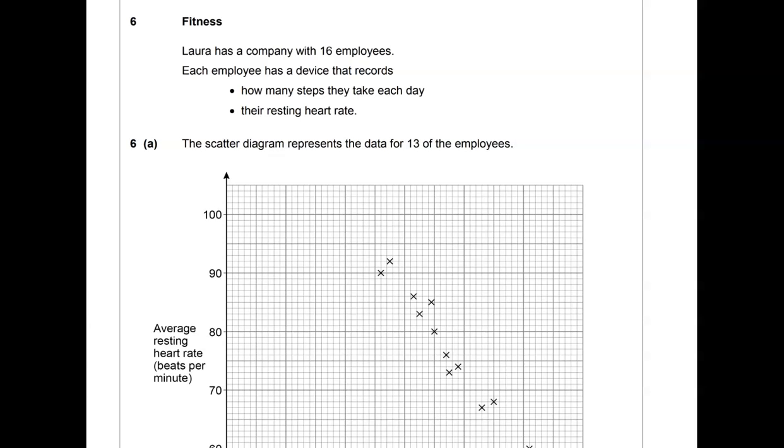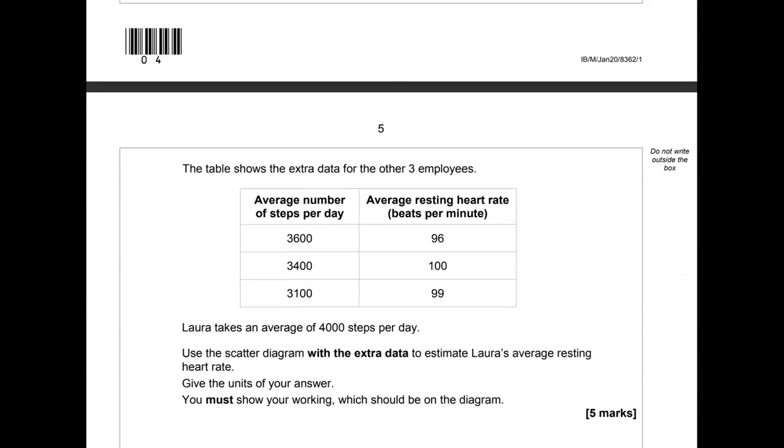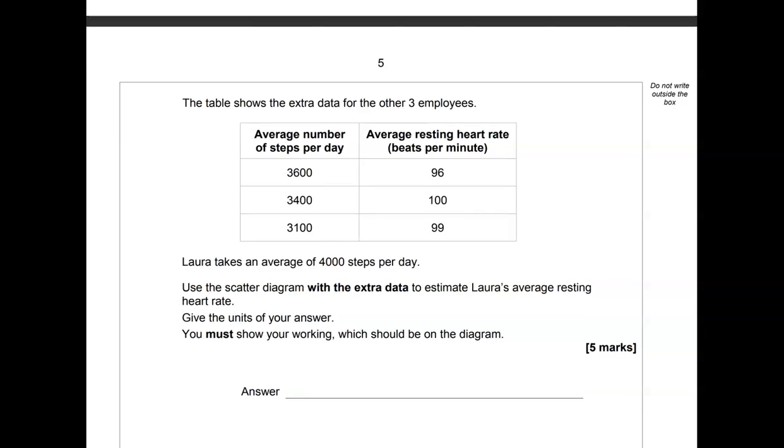Question 6. Laura has a company with 16 employees. Each employee has a device that records how many steps they take each day, their resting heart rate. The scatter diagram represents the data for 13 of the employees. The table shows the extra data for the other 3 employees. So we've got average number of steps per day, 3600, being matched with average resting heart rate, which is 96 beats per minute.